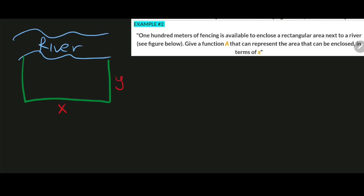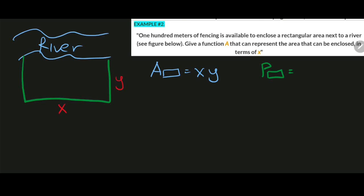Since we are asked to give a function A that can represent the area, we will use the area of a rectangle. The area of a rectangle is X times Y, or length times width. Now since we are using 100 meters of fencing, we also need the details of the perimeter. The perimeter of a rectangle using X and Y variables is 2X plus 2Y.